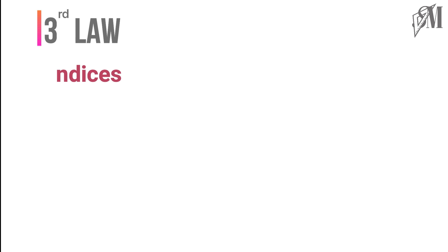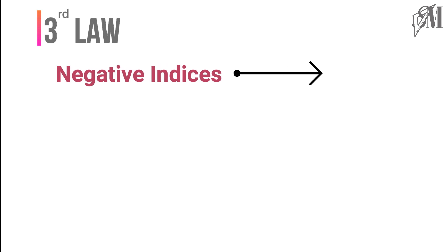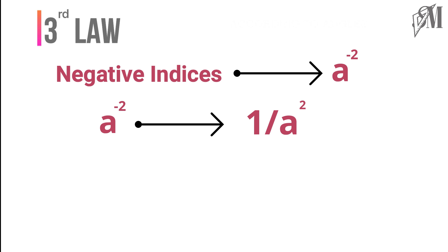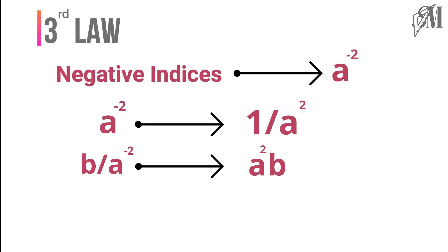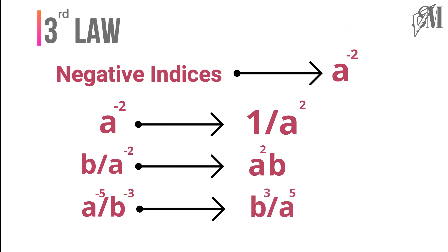The third law is about negative indices. When a power has a negative index, we can change it into a positive index. A power with a negative index can be written as the same power over 1 with a positive index. Similarly, if a power with a negative index is in the denominator of a fraction, we can make it positive by moving it to the numerator. If both denominator and numerator are powers with negative integers, we can interchange them to make the indices positive.